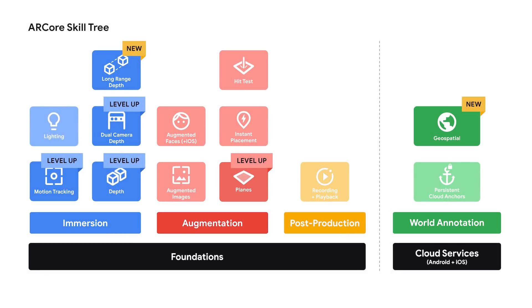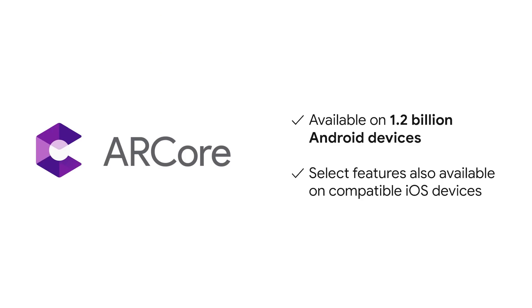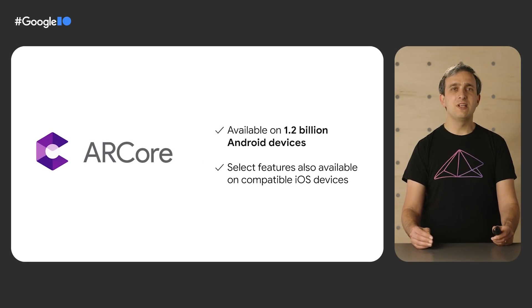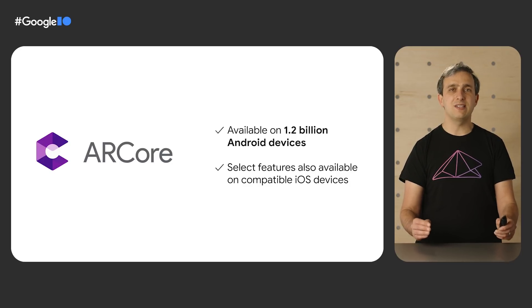There are many different capabilities that enable AR. We group these all together into the ARCore skill tree. We've been steadily leveling up foundational capabilities while adding new ones since ARCore was first released in 2017, working on ways to make our technology faster and more accurate without requiring people to buy new mobile devices. ARCore is available on over 1.2 billion active Android devices, and for cross-platform AR apps, select features are available on iOS as well. We support the iPhone 6s and up. AR is used by core Google apps such as Google Maps for walking navigation, as well as by third parties such as TeamViewer for remote AR assistance solutions.